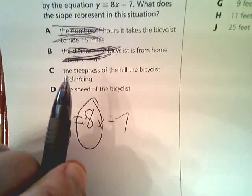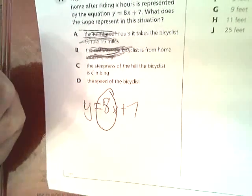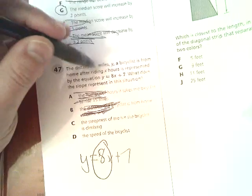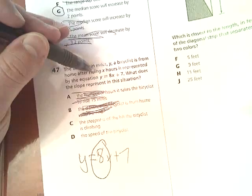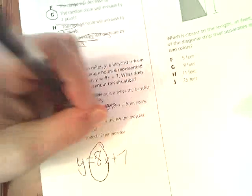C says the steepness of the hill the bicyclist is climbing. What? That doesn't have anything to do with anything. This says it's the distance, this says hours. This is nothing about the steepness of the hill. It's completely irrelevant to the question. It's just a distractor.